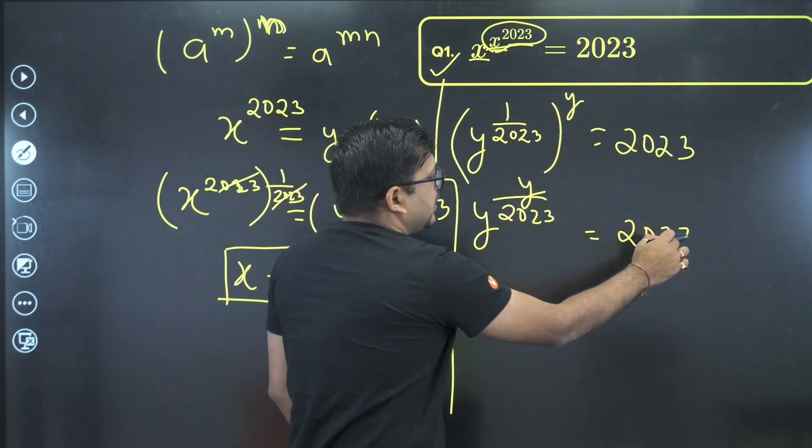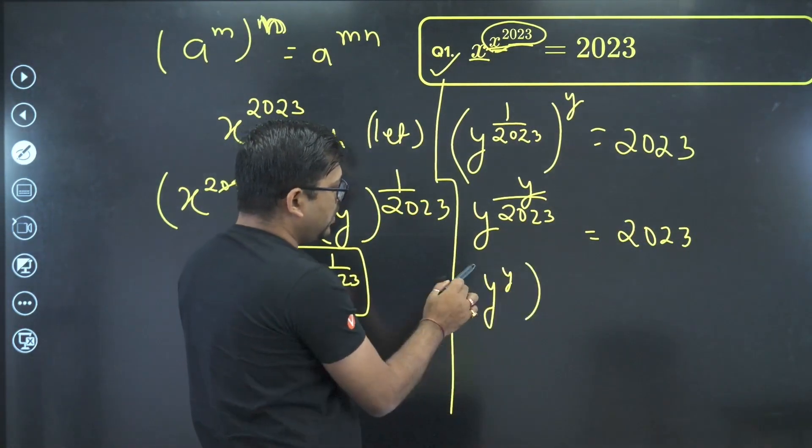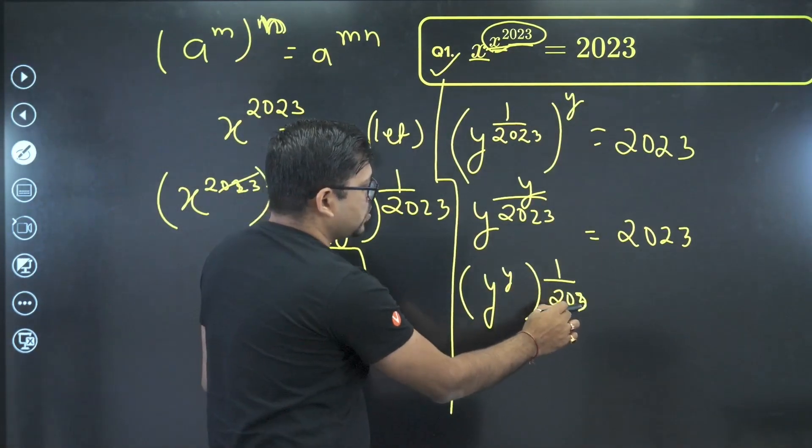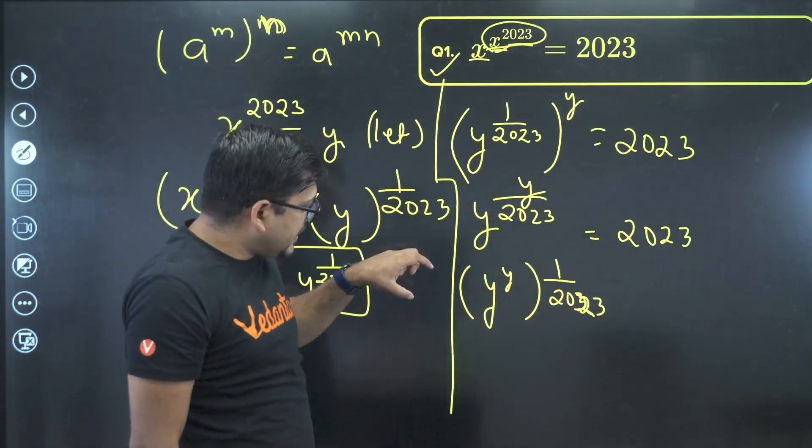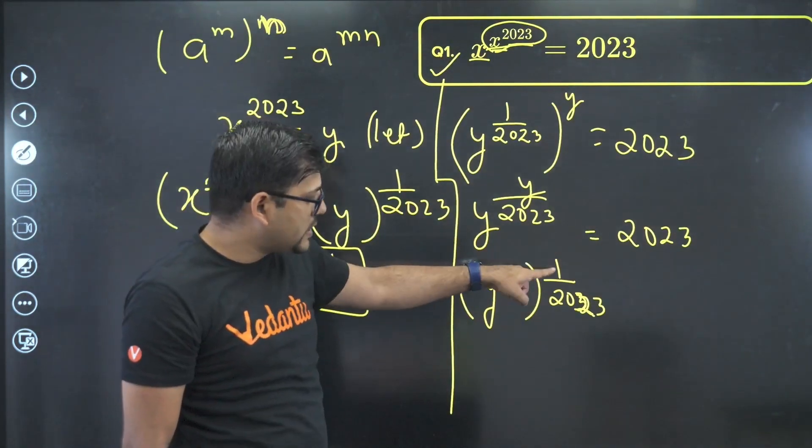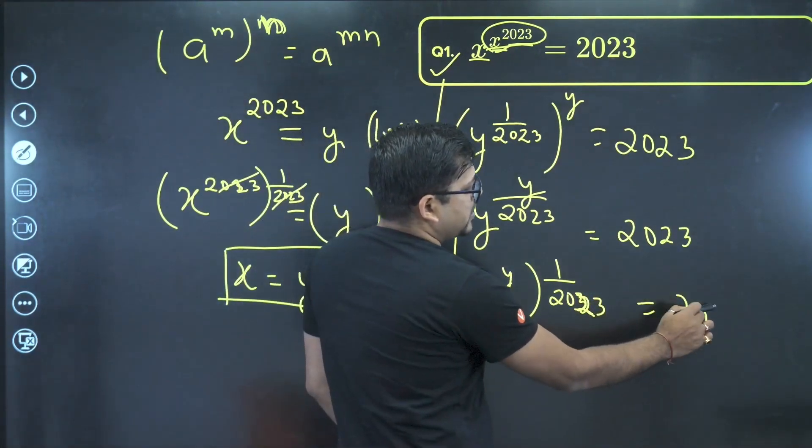Now what can be done, I can write it like this, y raised to power y and whole raised to power 1 upon 2023. I have sent this 2023 outside. Now you might be thinking, why did I do that? Because here I am able to see that this is y raised to power y and outside it's 1 upon 2023. And in the right hand side, we have 2023.